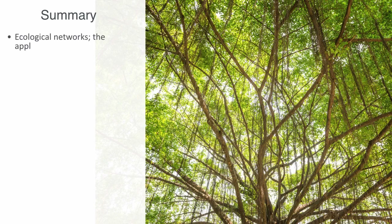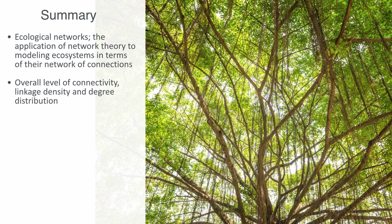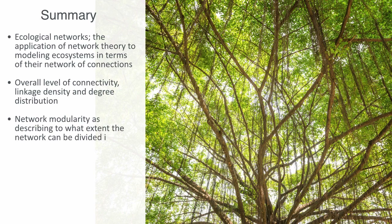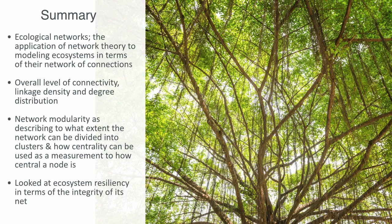In this video we've been talking about ecological networks — the application of network theory to modeling and analyzing ecosystems in terms of their network of connections. We talked about overall features including the overall level of connectivity, linkage density, and degree distribution. We discussed network modularity as describing to what extent the network can be divided into highly interacting local clusters, and how centrality can measure how significant a node is within the overall system. Finally, we looked at ecosystem resilience in terms of network integrity — noting how connectivity can both enable robustness by enabling greater resource flow, but also add to vulnerabilities by giving rise to the possibility of cascading food web disturbances.